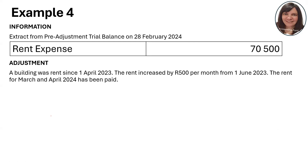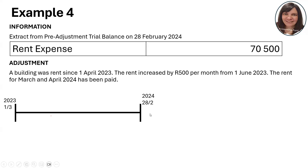Example four: the pre-adjustment trial balance shows a rent expense balance of 70,500. A building was rented since 1 April; the rent increased by 500 per month from 1 June; and the rent for March and April has been paid in advance. When you see lots of dates, don't freak out — use a timeline. My financial year ends 28 February 2024, therefore it starts 1 March 2023. The building was rented from 1 April, and from 1 June the rent increased by 500.